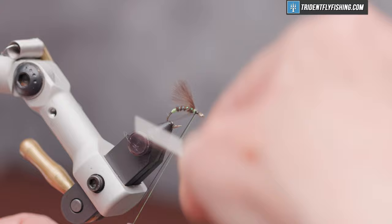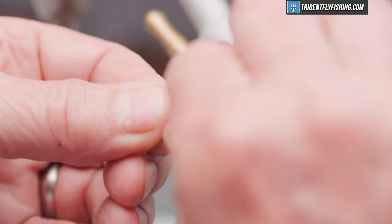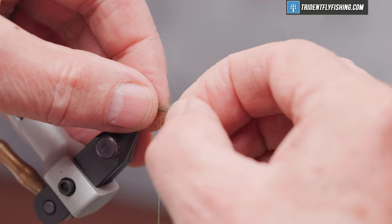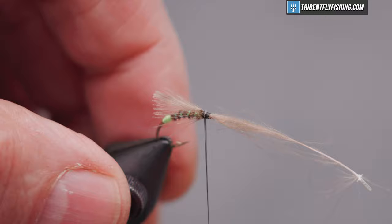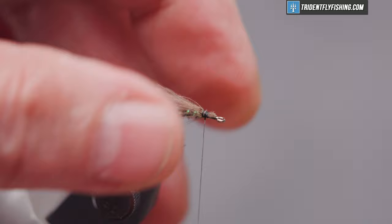Next, we're going to tie in our underwing. It's just some CDC, dun colored, natural dun colored. Got one feather all picked out here. And we're going to tie this in right on top at the start of the body. And we want it to be back just as far, maybe as the egg sac. Cut off our excess. And neaten that up.